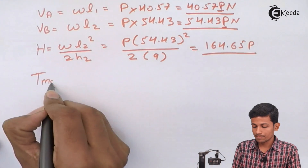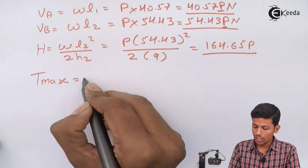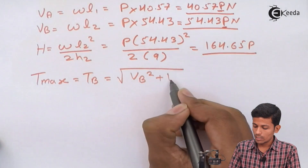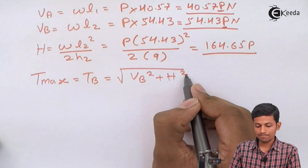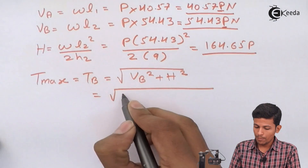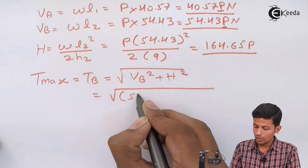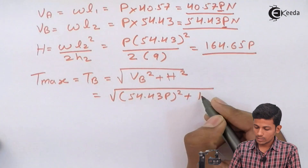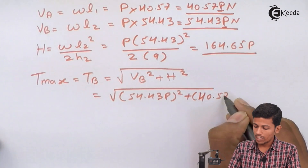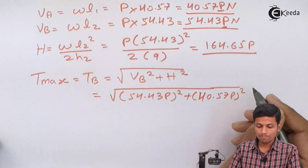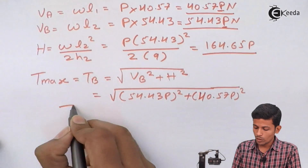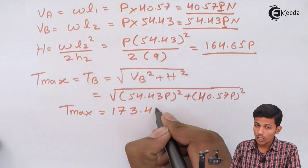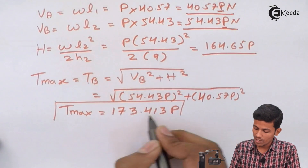Now we find T_max using the formula T_B = √(VB² + H²). Substituting: T_B = √((54.43P)² + (164.65P)²). Solving this gives T_max = 173.413P.